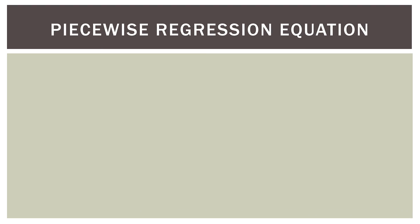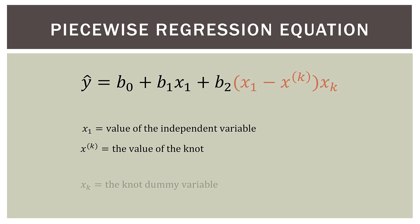Here is the piecewise regression equation: y-hat equals b-sub-zero (the intercept), plus b-one times x-sub-one (the first linear term), plus b-two times the quantity (x-sub-one minus x-to-the-k) times x-sub-k. This last term represents the knot term for the right-hand side of the piecewise regression. x-sub-one is the independent variable, x-to-the-k is the knot value, and x-sub-k is the knot dummy variable indicating which side of the knot a point falls on.